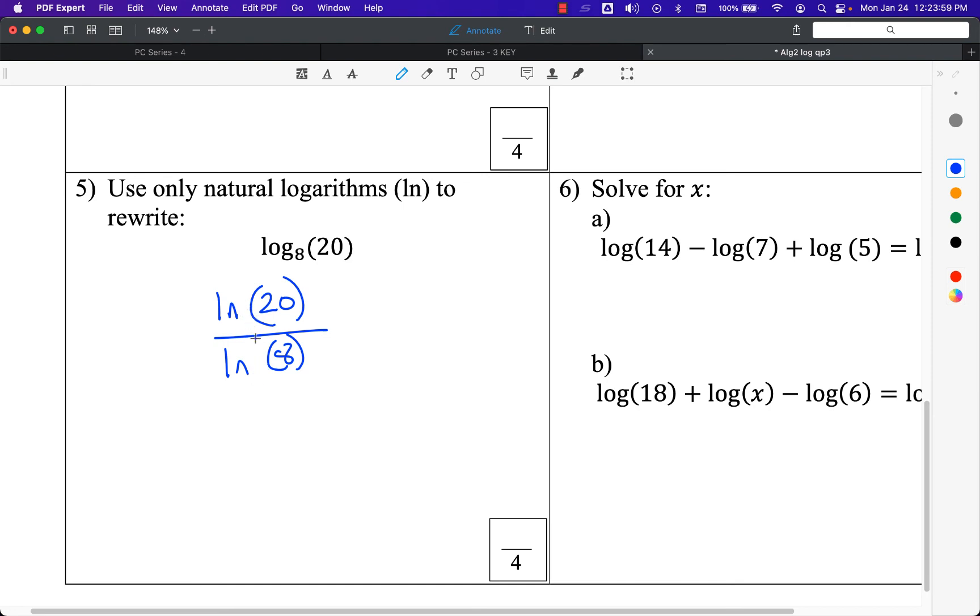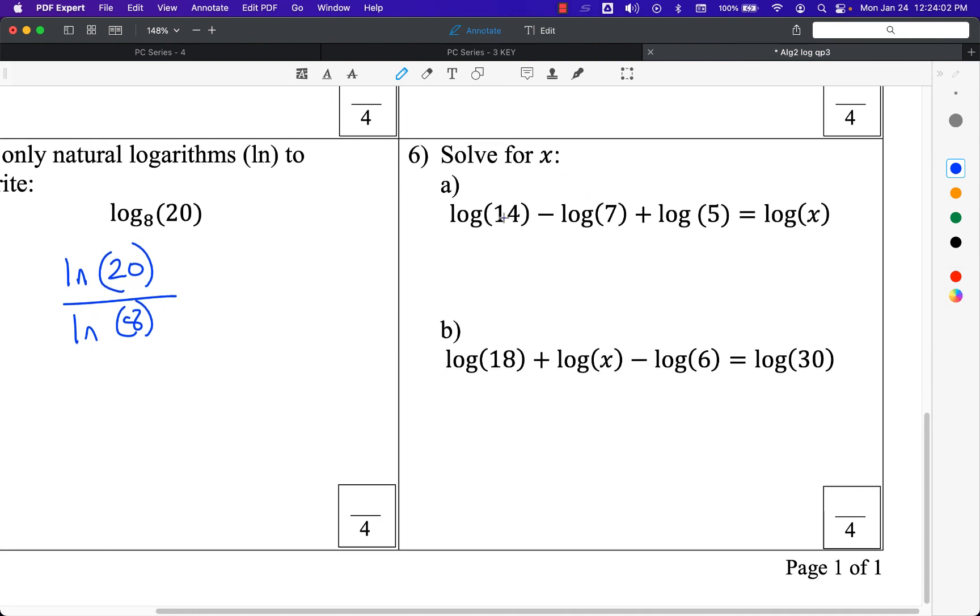And number 6, a little bit harder than our old practice quizzes. These two combined is log of 14 divided by 7, which is just 2, and then I'm going to multiply by 5. So 2 times 5 is 10. So this is going to be log of 10, x is equal to 10. Showing my work a little bit more, this is really 14 divided by 7 times 5 equals x. 14 divided by 7 is 2, 2 times 5 is 10, 10 is x.